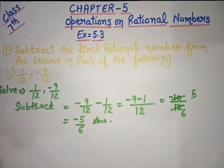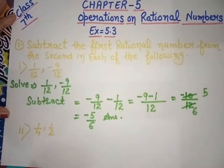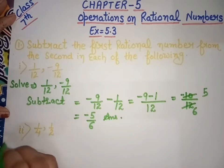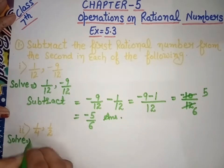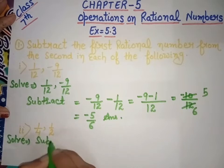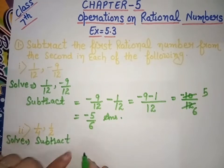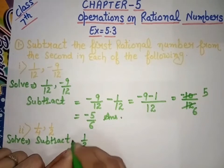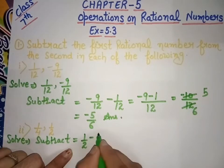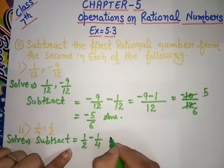Second sum: we have 1 over 4 and 1 over 2. Same as before, we have to subtract the first from the second. So we write: 1 over 2, minus 1 over 4. The denominators are different.